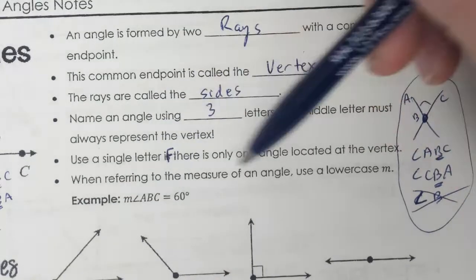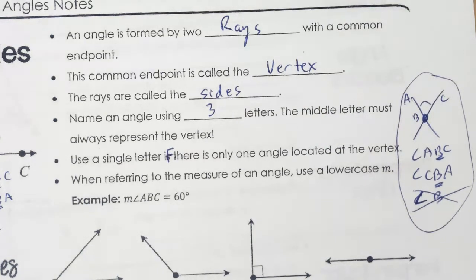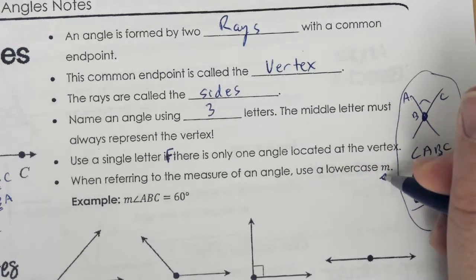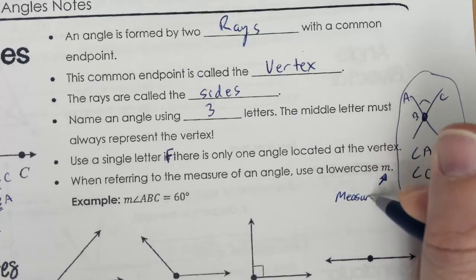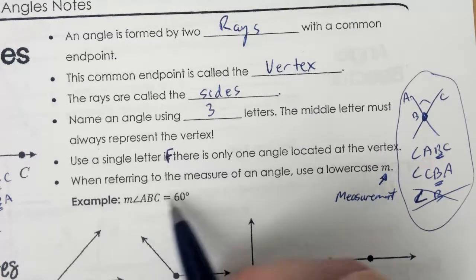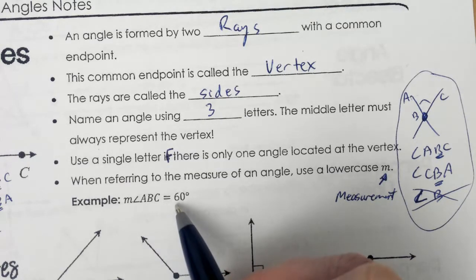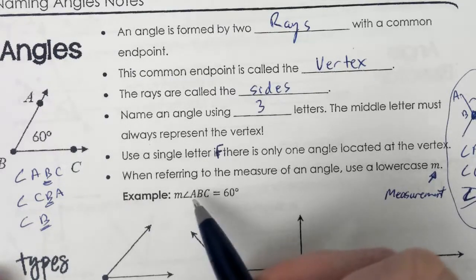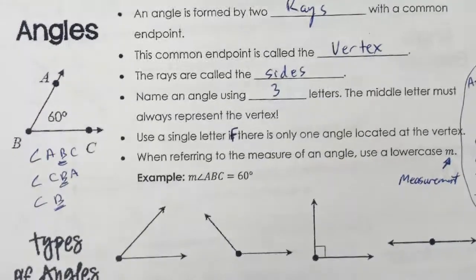When referring to the measure of an angle, use a lowercase m, as in measurement. So when I'm saying angle ABC is 60 degrees, I have to put a little m in the front, meaning it's the measurement — the degree.